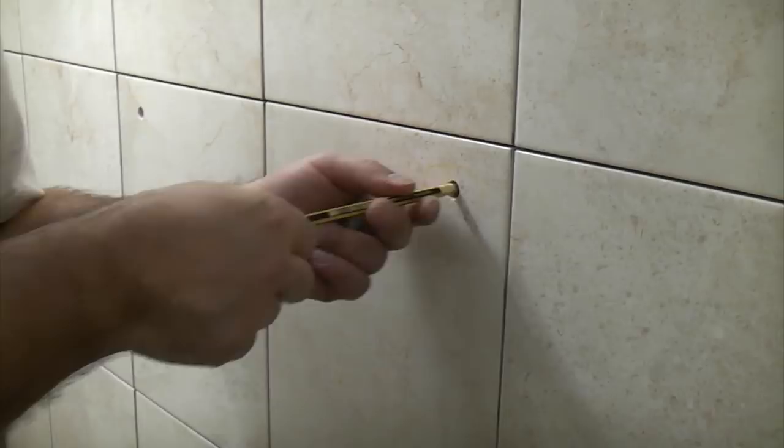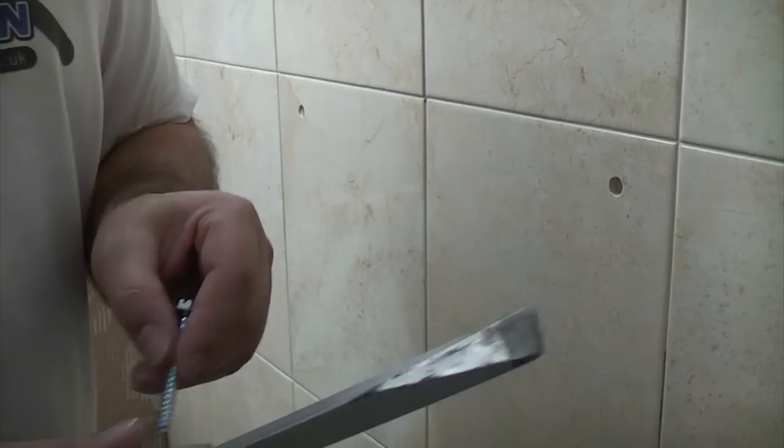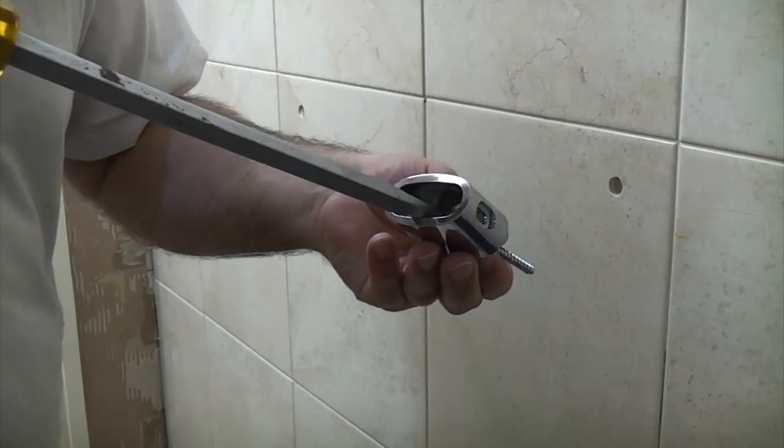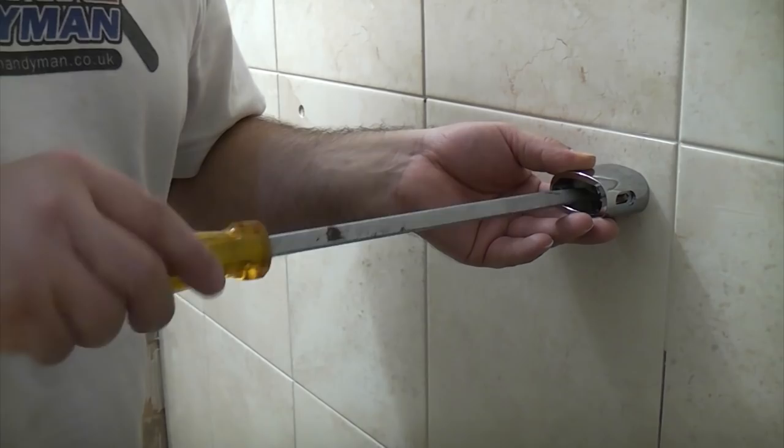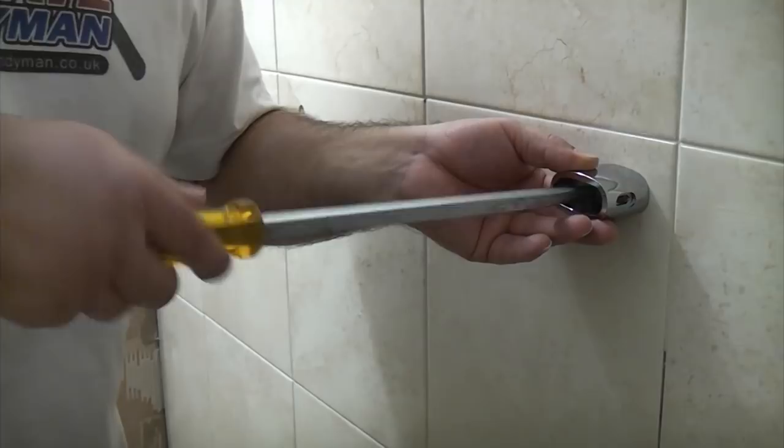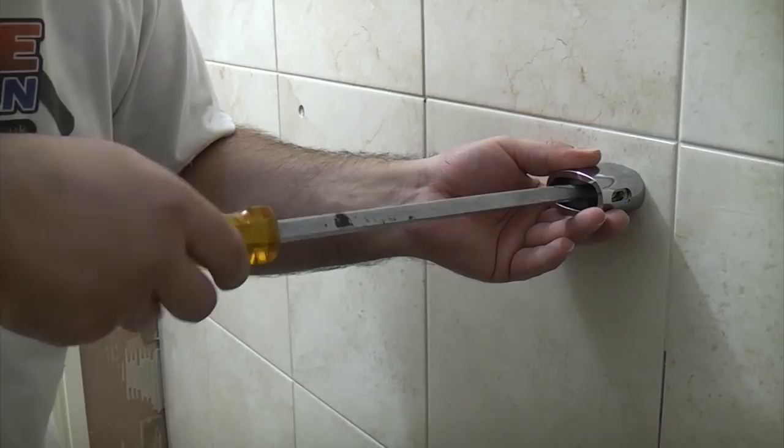So now I am just going to take a Heavy Duty Wonder Wipe and I am just going to clean off the chinagraph pencil that we put on earlier. So I am now going to use the fixing bolts supplied. I am going to push that through the bracket and I am going to fasten that to the wall. It is essential whenever you are fixing anything like this to a tiled wall that you get the plug through the actual tile. If you leave the plug in the surface of the tile and you tighten it up you are going to crack your tile. So I am going to repeat that on all four holes.